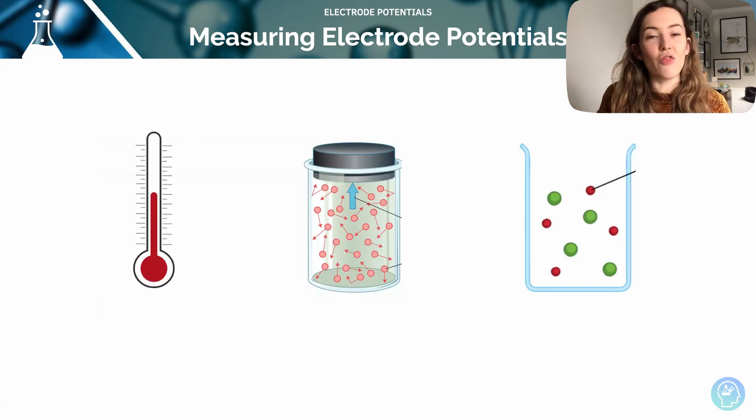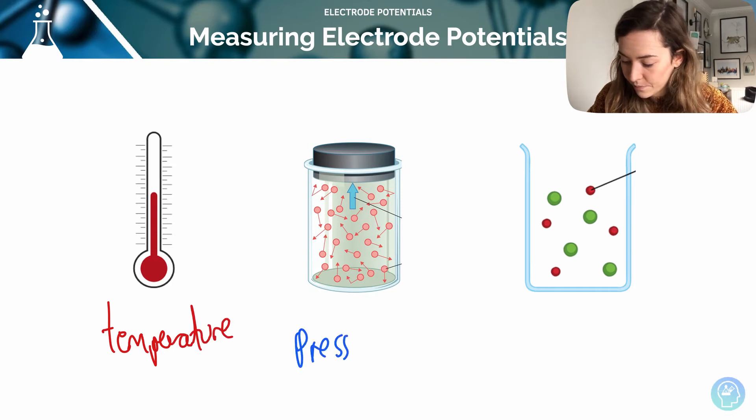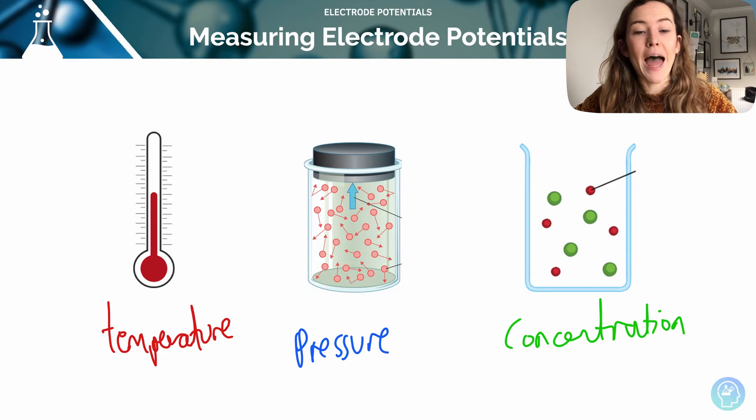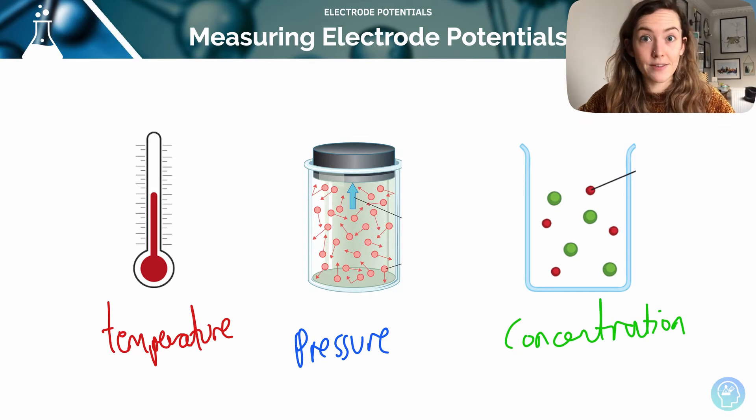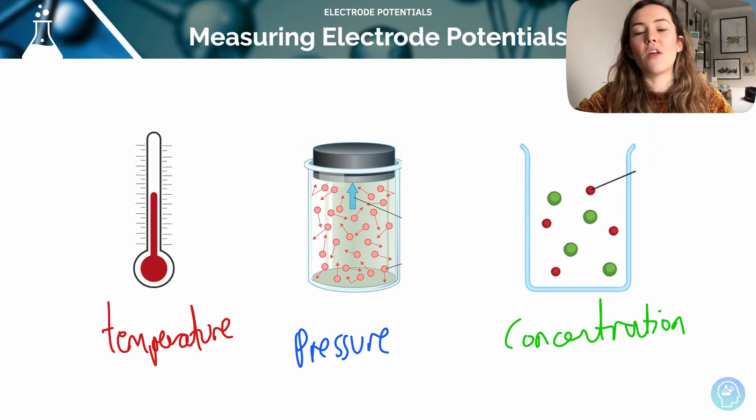Things that affect those values of the standard electrode potential are going to be temperature, pressure, and concentration, because they are going to effectively change the position of the equilibrium of that redox couple in that half-cell. If the position of the equilibrium is shifted in favor of the forward reaction—for example, the reduction—then the electrode potential is going to increase. That value is going to increase, and vice versa. If the equilibrium is shifting more to the left, showing oxidation is happening, then the value of our electrode potential is going to decrease; it's going to become more negative.